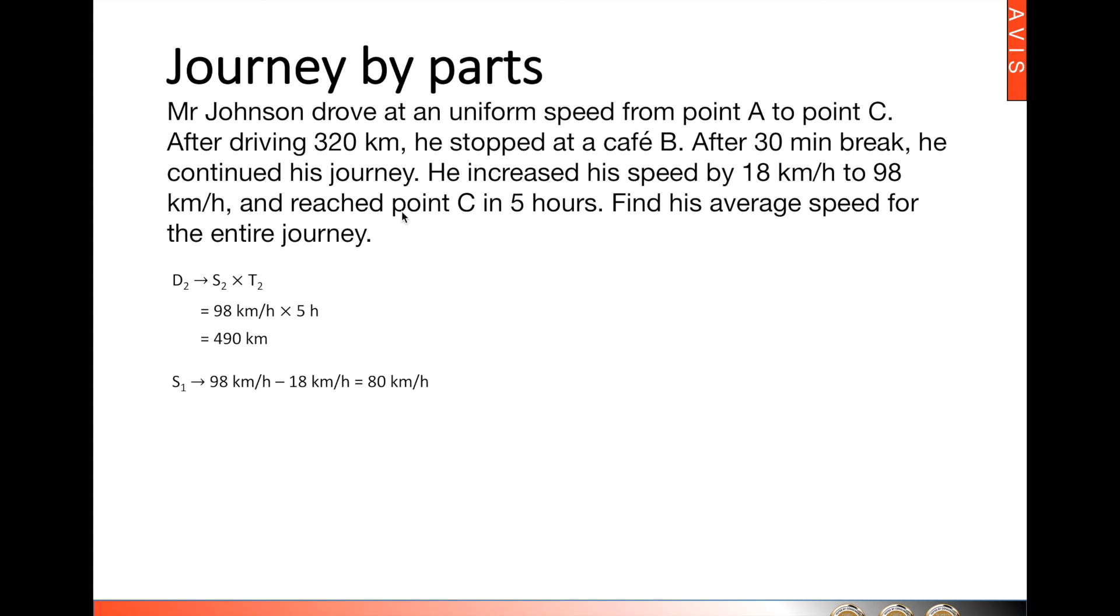Next, we were told that the first part of his journey was 320 km, and we have just found that his speed for Part 1 is 80 km per hour. Taking distance divided by speed will be able to find what is the time taken for his first part of the journey.